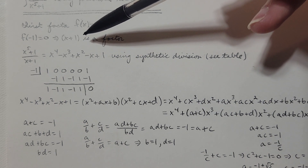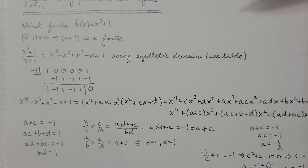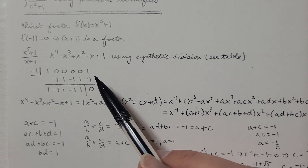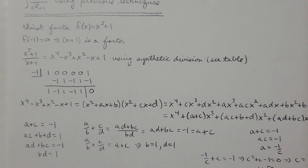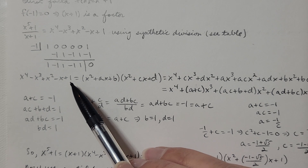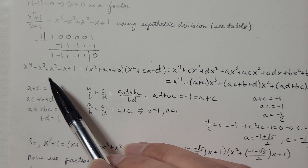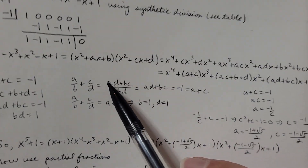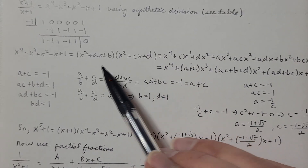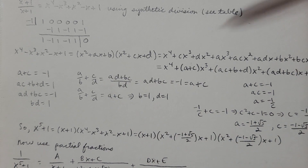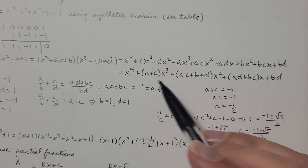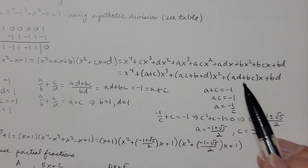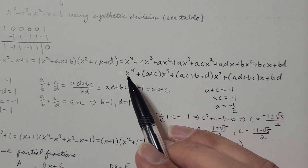To factor further, divide x⁵+1 by (x+1), which gives x⁴ - x³ + x² - x + 1, using synthetic division as the quickest option. The next step is to factor x⁴ - x³ + x² - x + 1, which separates into two quadratic factors. Then we need to find constants a, b, c, and d.